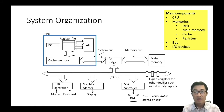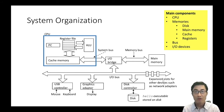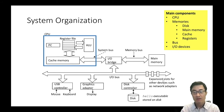The system components are connected through buses. We have a system bus between CPU and chipset, a memory bus between chipset and main memory, and an IO bus between chipset and peripheral devices.